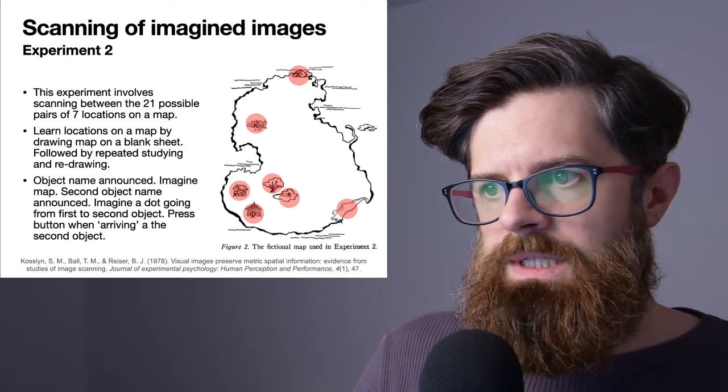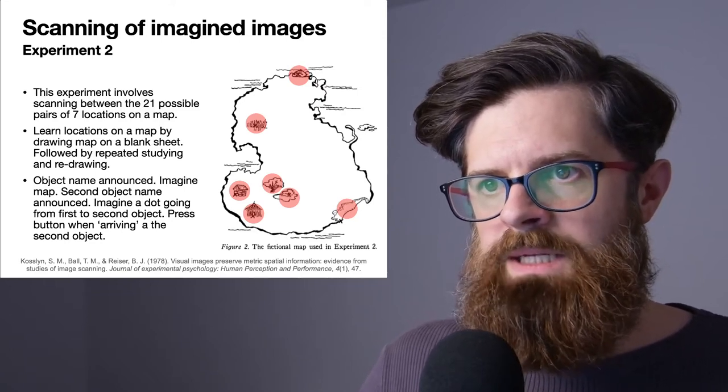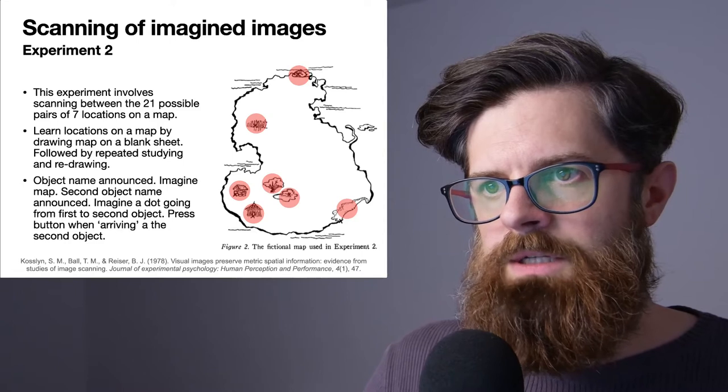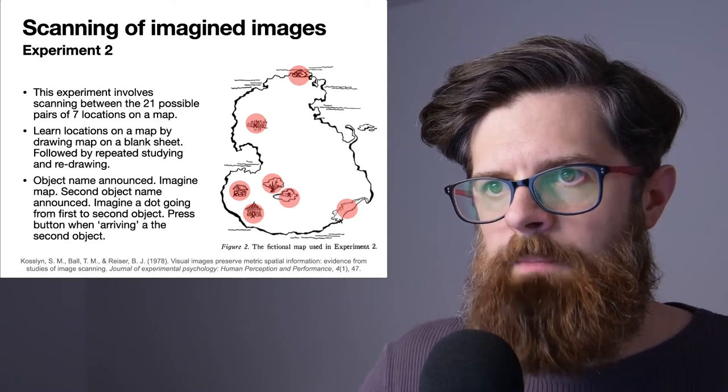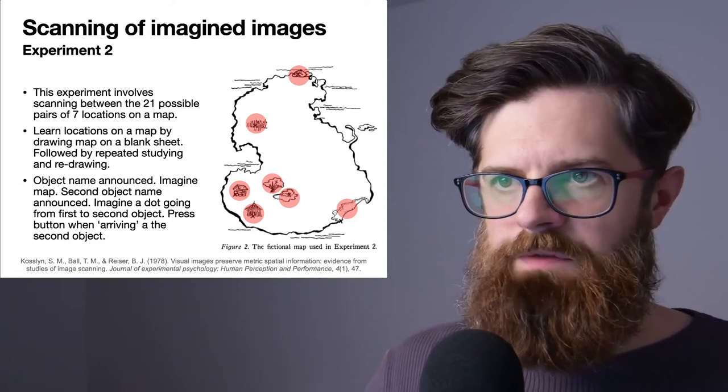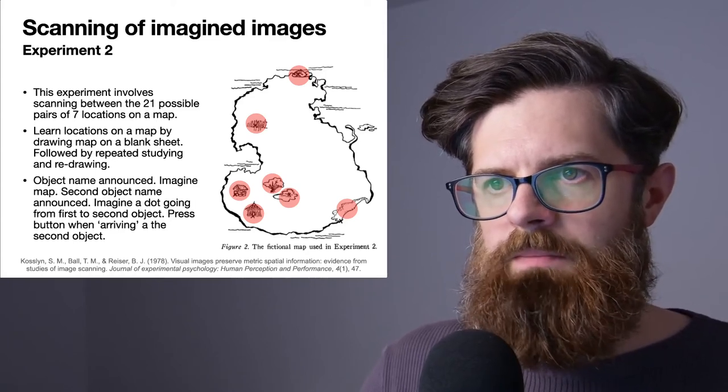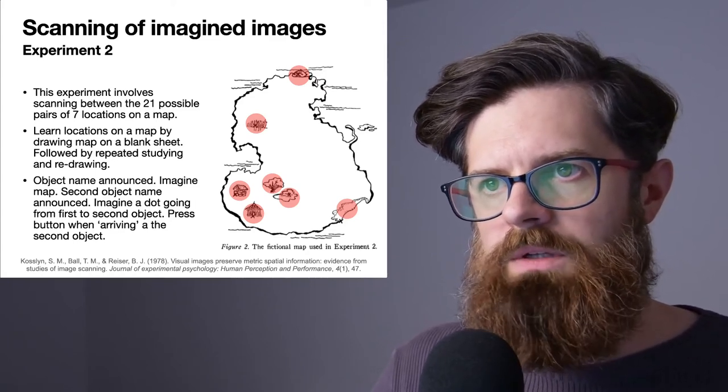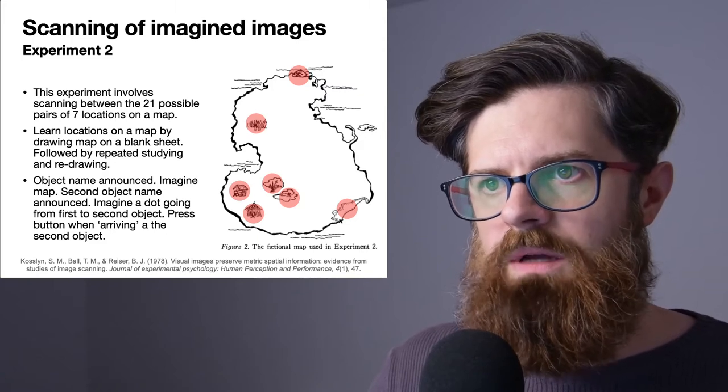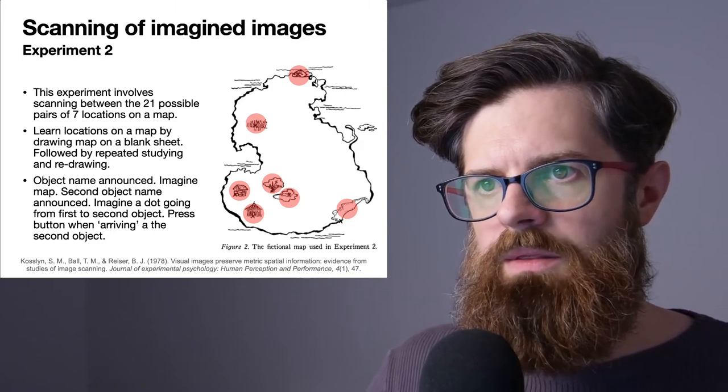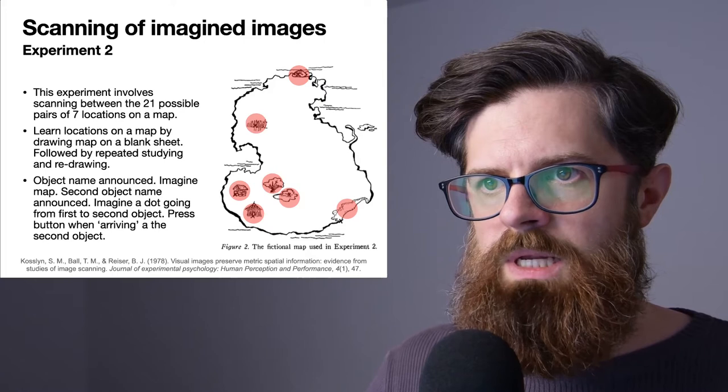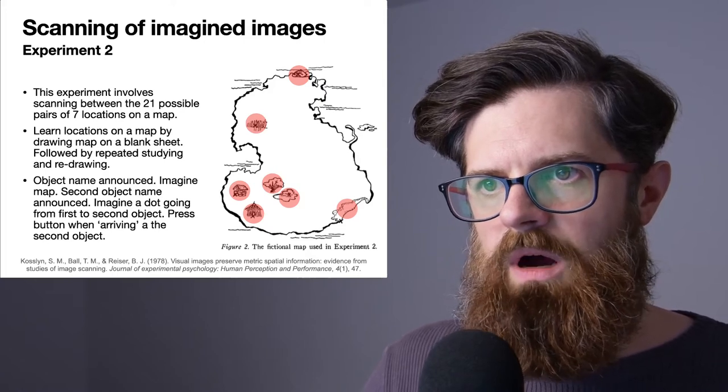You can see the kind of stimuli that was presented here in this map. Participants were given a map of a fictional island and they had seven landmarks. Each of these landmarks had names like the beach, the tree, the lake and the hut and so on.